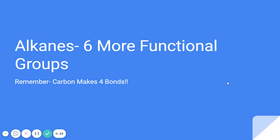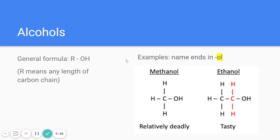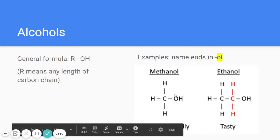The first type is an alcohol. The general formula is R-OH, where R means any length of carbon chain — one carbon, fifteen carbons, a million carbons. If there's an OH, it's an alcohol. The name ends in '-ol', so you can identify it as an alcohol because methanol ends in '-ol', ethanol ends in '-ol'.